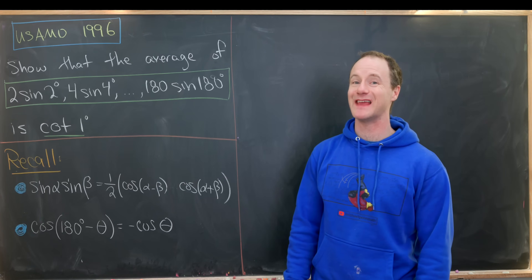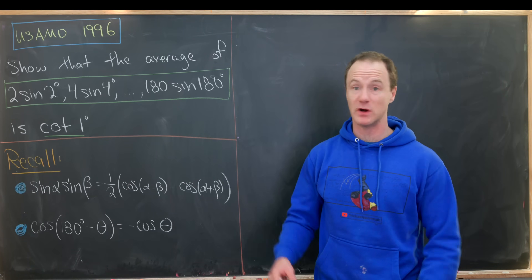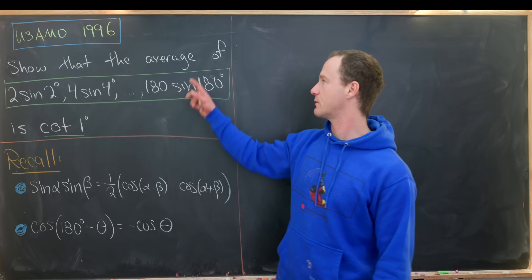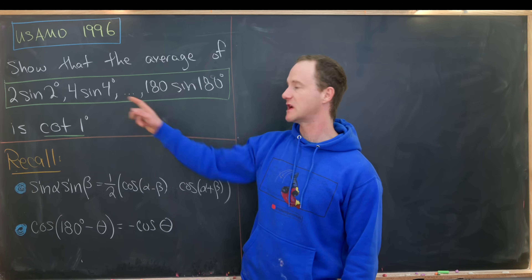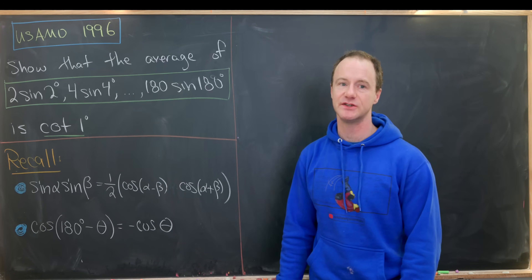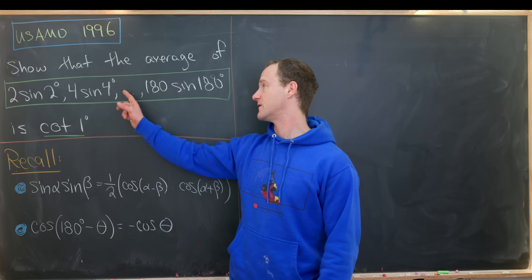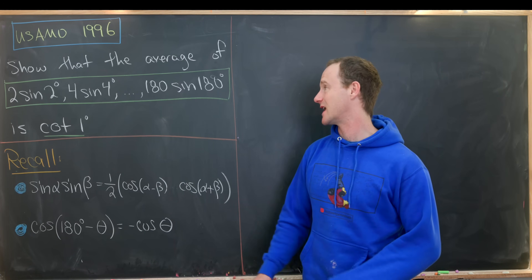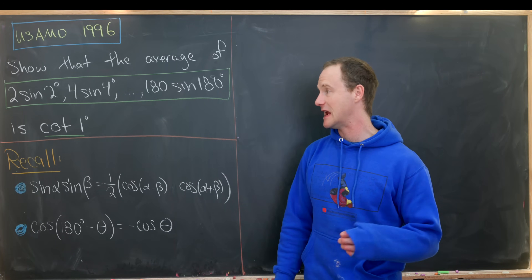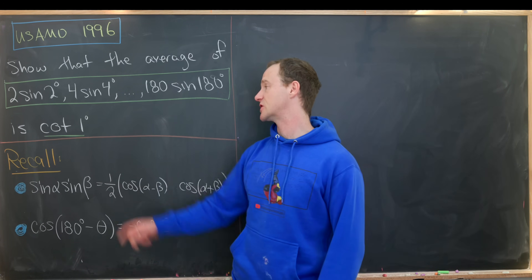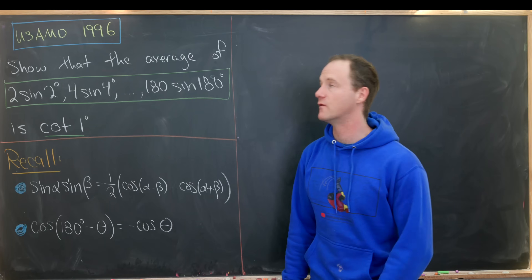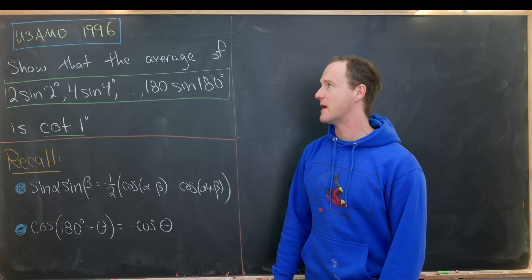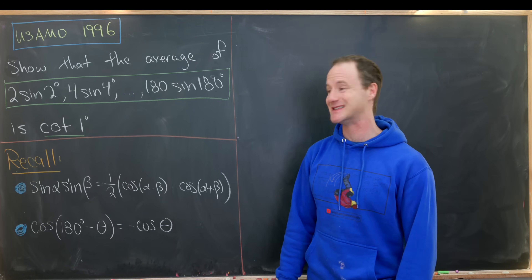Here we have a nice problem about finding the average of a bunch of trig values. In particular, we want to show that the average of two times sine two degrees, four times sine four degrees, all the way up to 180 sine 180 degrees is the cotangent of one degree. This comes from a U.S. Math Olympiad in the year 1996.